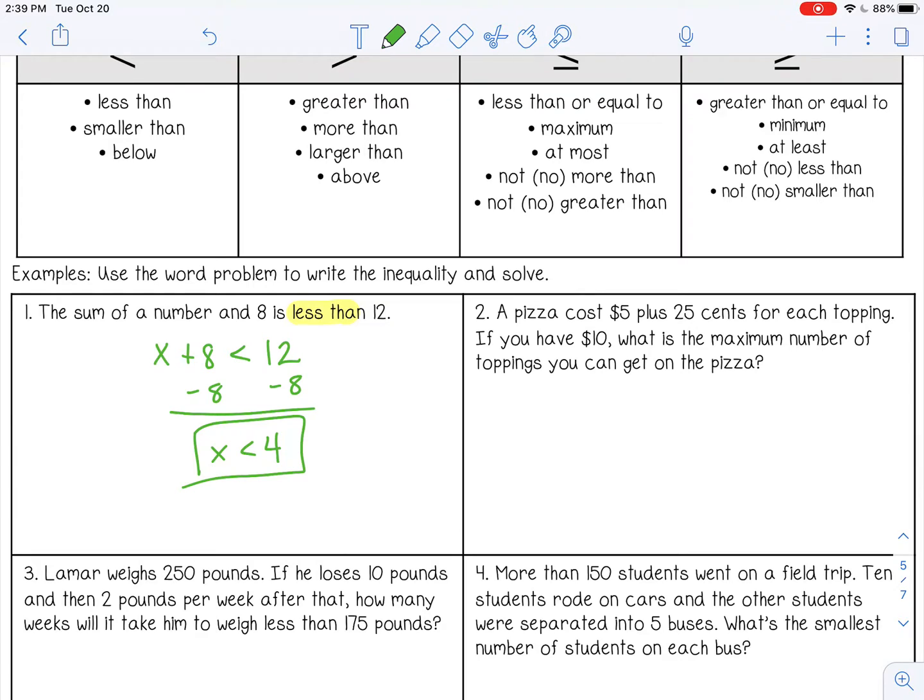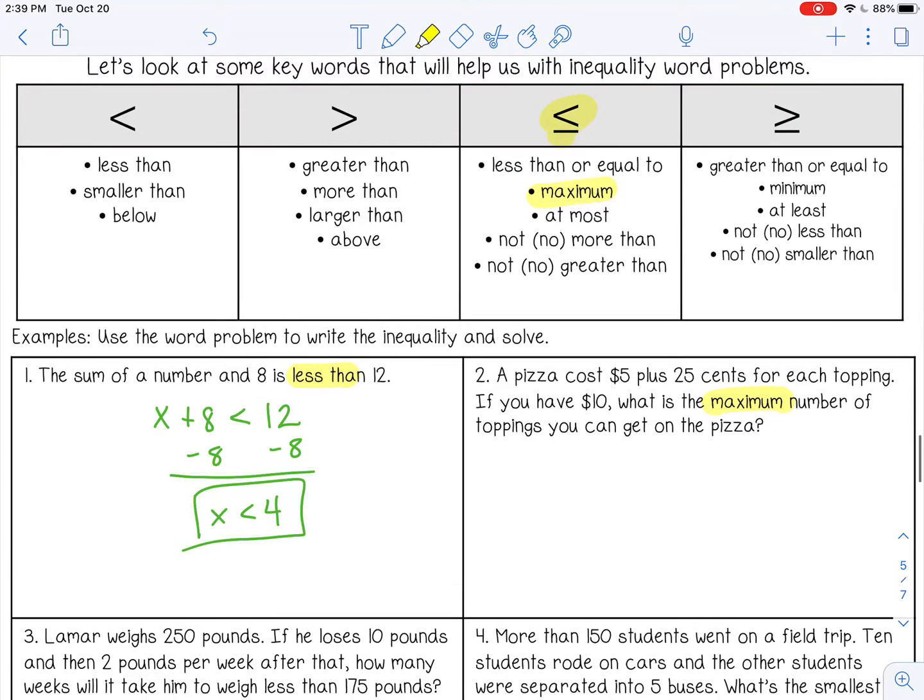Number two, a pizza costs $5 plus 25 cents for each topping. If you have $10, what is the maximum number of toppings that you can get on the pizza? So maximum, I see that right here. That's going to be less than or equal to. And the reason is because we don't want to go above that max. We want our toppings to be at the max or less because all we have is $10. We can't go over that amount. So that's why it's less than, even though maximum sounds like it may be greater than, it's actually maximum that or less.